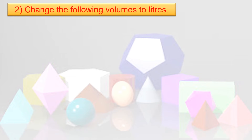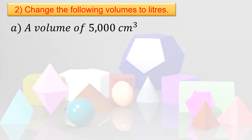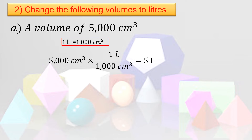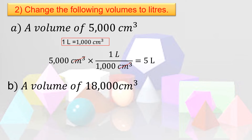Now let us change the following volumes to liters. For a volume of 5,000 cubic centimeters, we know that 1 liter equals 1,000 cubic centimeters. So: 5,000 cubic centimeters times 1 liter over 1,000 cubic centimeters. Cancel cubic centimeters, then divide 5,000 by 1,000 — you can cancel the three zeros — leaving 5. So 5,000 cubic centimeters equals 5 liters.